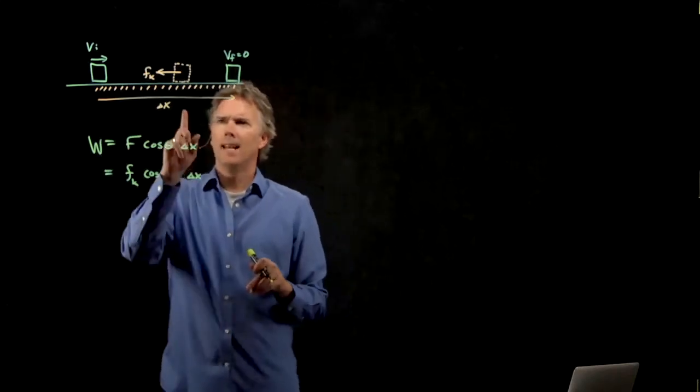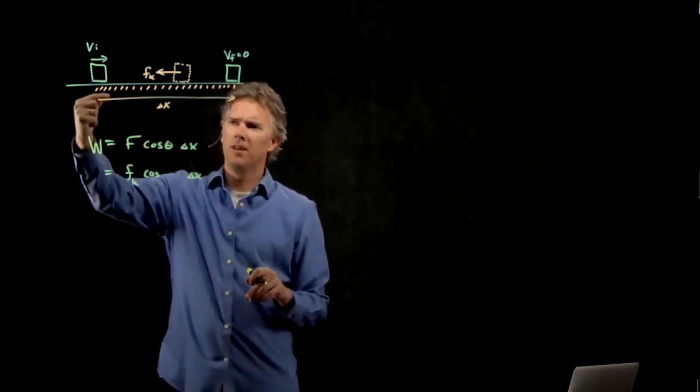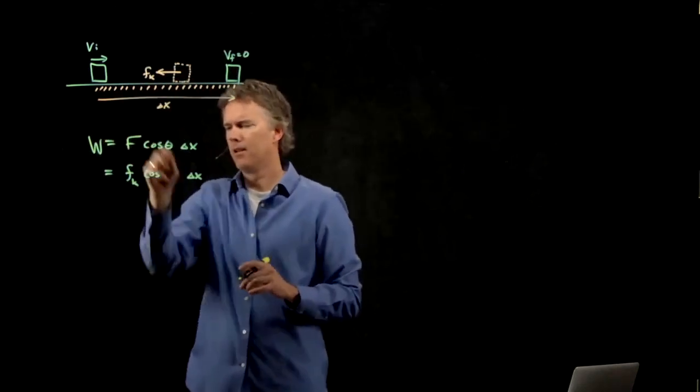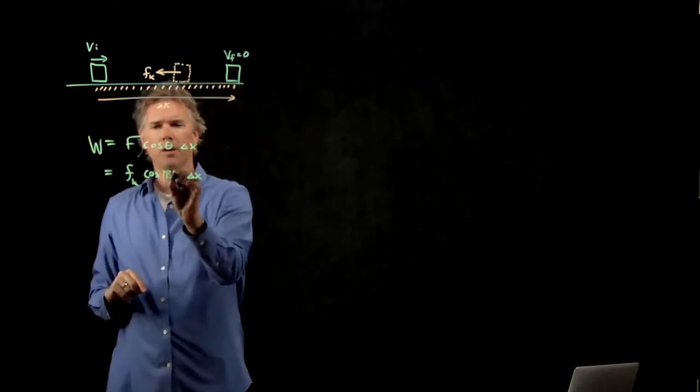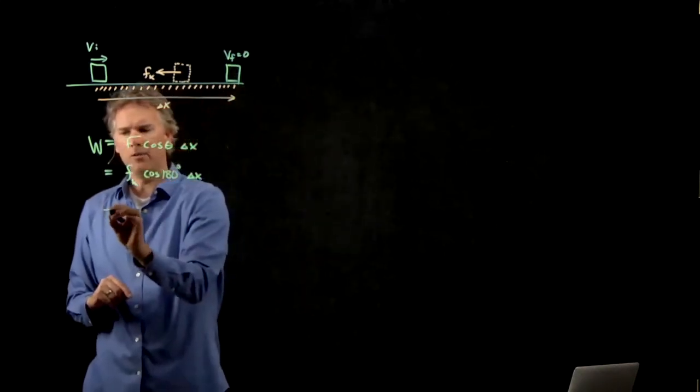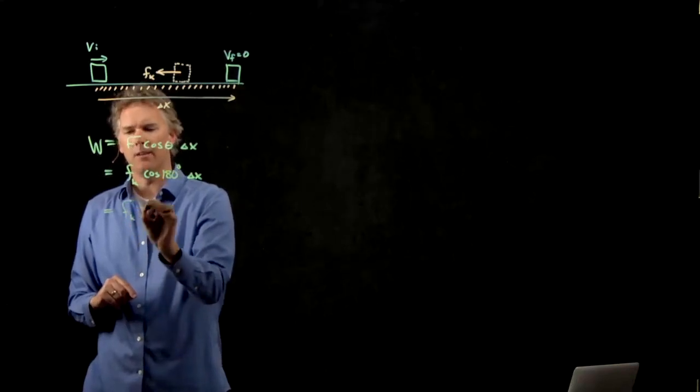I need to put in 180 degrees, right? Because delta x is this way, but f is that way. And so the angle between them is, in fact, 180 degrees. What's the cosine of 180 degrees? Negative one.